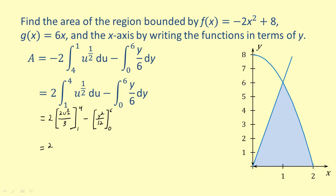Substituting, we get 2 times the quantity [(2 times 4^(3/2) over 3) minus (2 times 1^(3/2) over 3)] minus 6 squared over 12. Simplifying, we get 19 over 3. Therefore, the area of the region is 19/3 square units.